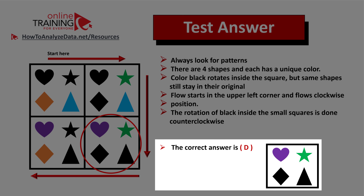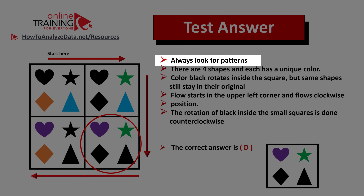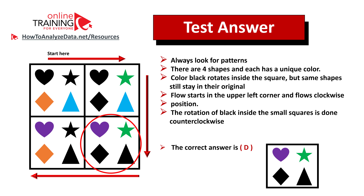Let's recap. Always look for patterns. In this case, there are four shapes and each shape has a unique color. Color black rotates inside the square, but the same shapes stay in the original position. The rotation inside the squares is done counterclockwise. Hopefully you've nailed this question and now know how to answer similar problems on the test.